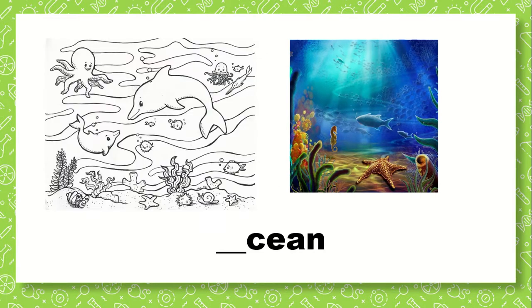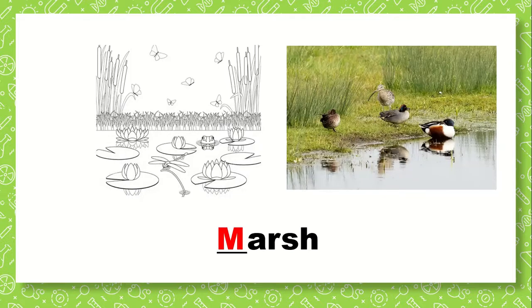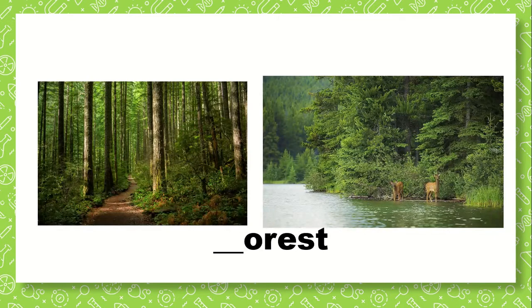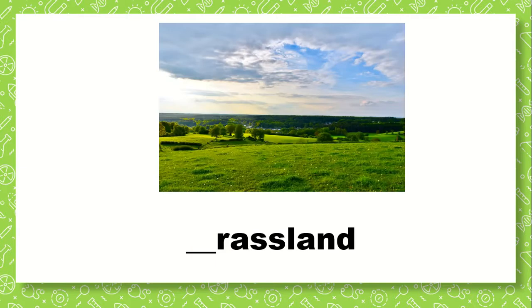Let's put the first letter of every environment. What is the first letter in ocean? O — ocean. Correct. Next, marsh — marsh with an M. Correct. Next, forest — F, forest. What letter should I put? F. Correct. Next, desert — da, da, desert. Which letter should I put? D. Correct. Next, grassland — which letter should I put? G. Correct.